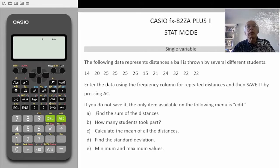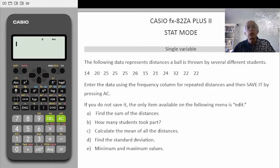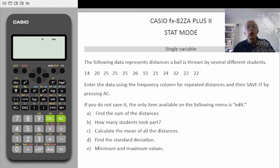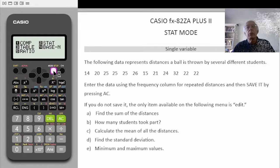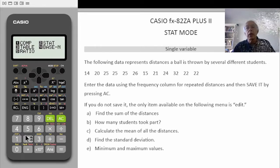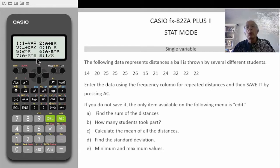Today we are going to be looking at the Casio FX82ZA Plus 2 and the stats mode. You need to go to the stats mode, so you push mode and you choose number 2, stats, bringing up a menu with 8 options.